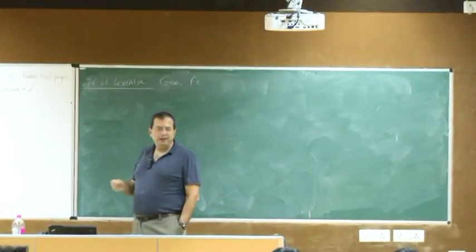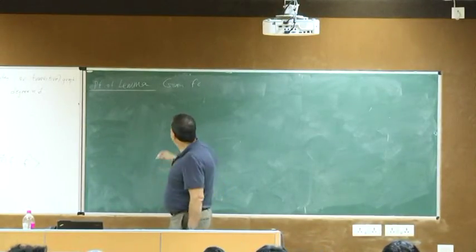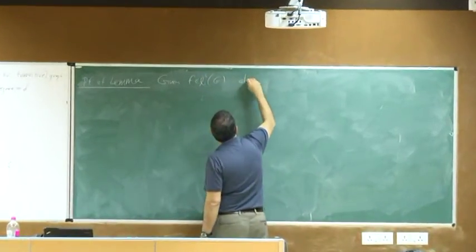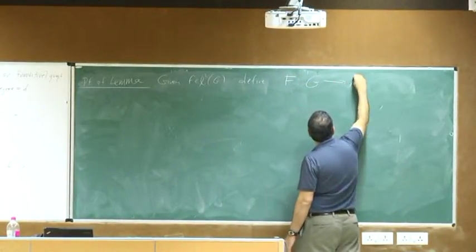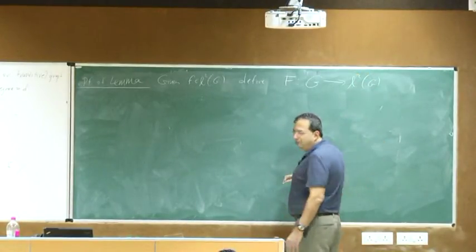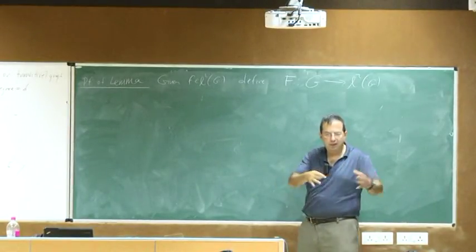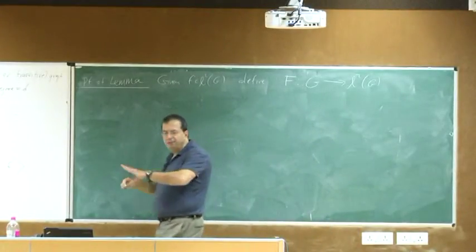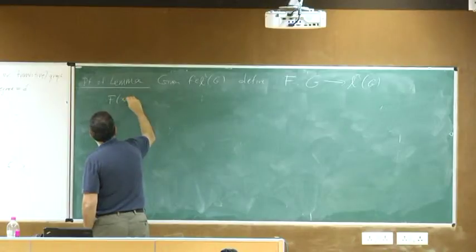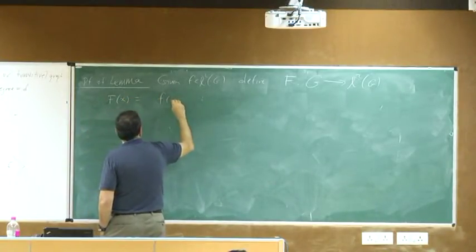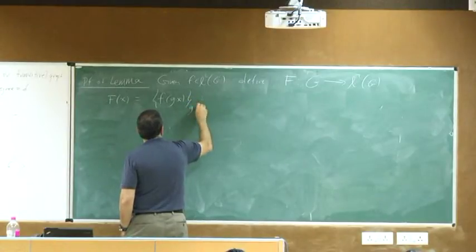The lemma will work for finite or infinite groups, but you may want to think of the finite case — it's more elementary. Given f in L2 of G, define capital F as a mapping from G to L2 of G. Capital F of X is defined as little f of GX, where G ranges over G.